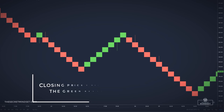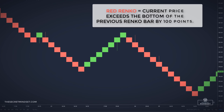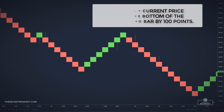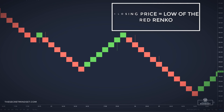The closing price of a green Renko bar is also the high for that green Renko bar. A new red Renko bar forms only after the current price surpasses the bottom of the previous Renko bar by 100 points. The closing price of a red Renko bar is also the low for that red Renko bar.